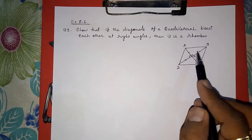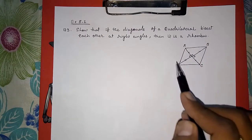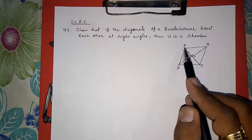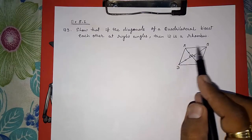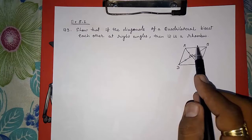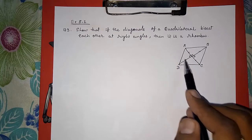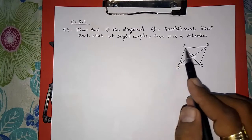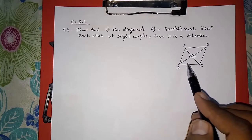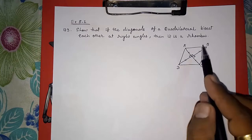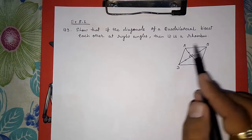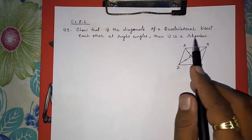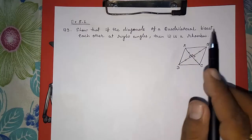To prove that it is a rhombus, we first need to prove that ABCD is a parallelogram, and then prove that all its sides are equal. If we prove all sides are equal, then it will become a rhombus.